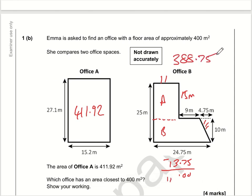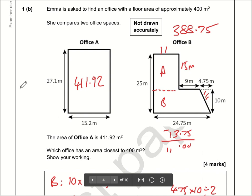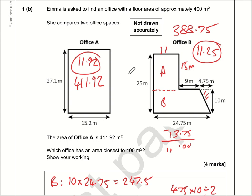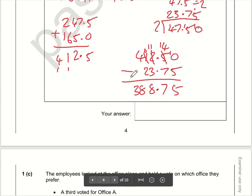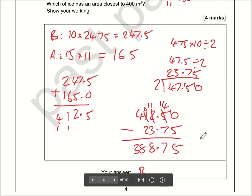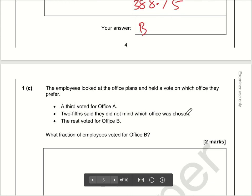We want to know which office is closest to 400 square metres. Office A is 411.92 — that's 11.92 away from 400. Office B is 388.75 — that's 0.25 away from 389, making a difference of 11.25 from 400. So comparing 11.25 versus 11.92, the answer is office B. Tricky question — that one had lots to do.